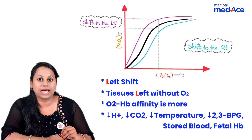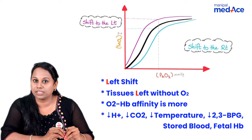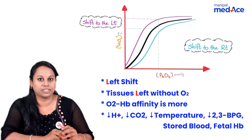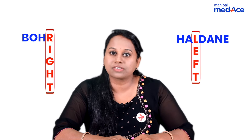Fetal hemoglobin has more affinity to oxygen, so fetal hemoglobin also can cause left shift of the curve. R for Bohr effect — right shift; L for Haldane effect — left shift. So, right shift is called Bohr effect, and left shift is called Haldane effect.